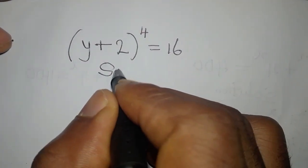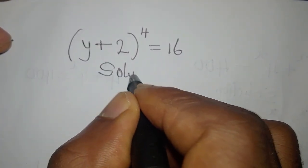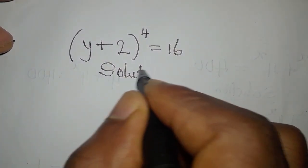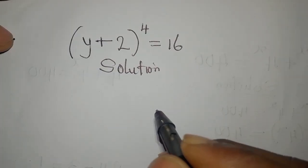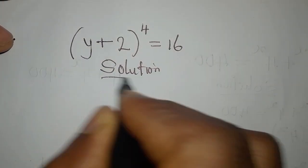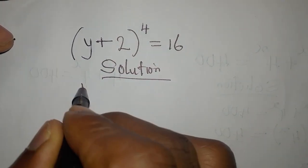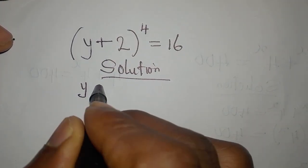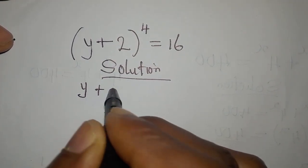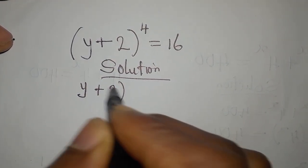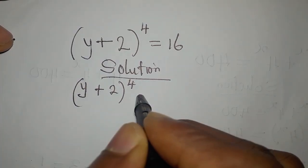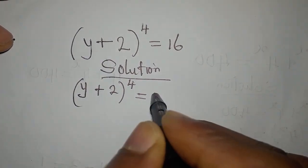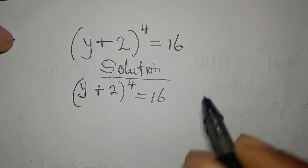Hi everyone. Let's provide a solution to this problem: (y + 2) to the power of 4 equals 16.